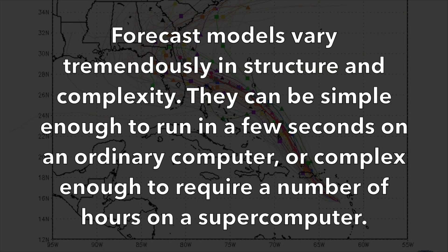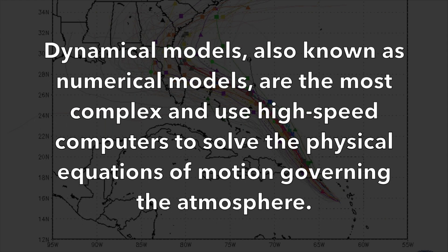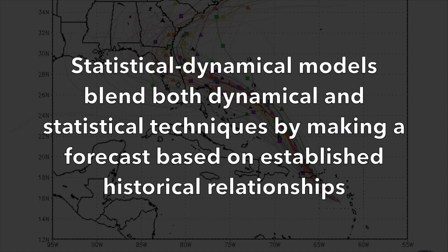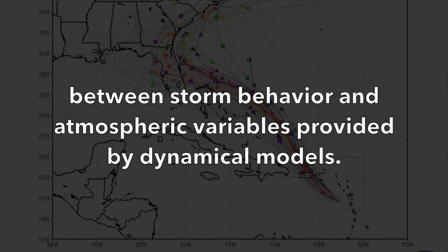From the National Hurricane Center: forecast models vary tremendously in structure and complexity. They can be simple enough to run in a few seconds on an ordinary computer, or complex enough to require hours on a supercomputer. Dynamical models, also known as numerical models, are the most complex and use high-speed computers to solve the physical equations of motion governing the atmosphere. Statistical models, in contrast, do not explicitly consider the physics of the atmosphere but instead are based on historical relationships between storm behavior and storm-specific details such as location and date. Statistical-dynamical models blend both techniques by making a forecast based on established historical relationships between storm behavior and atmospheric variables provided by dynamical models.